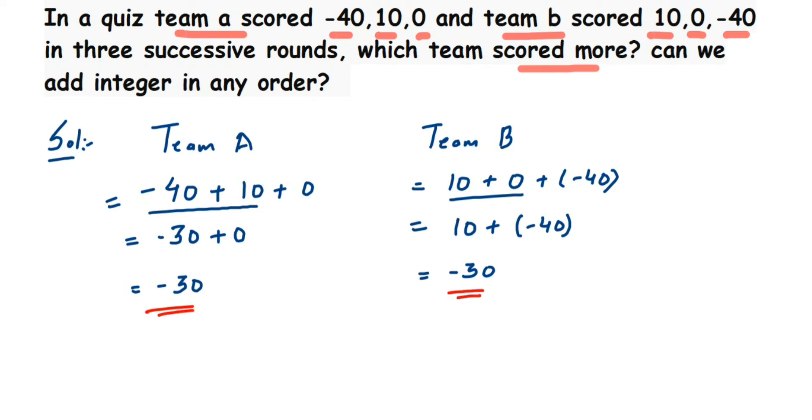What we can conclude from here is if you add integers in any order, the result will always be the same. You can replace the numbers, rearrange them, and you'll get the same answer. But when you subtract integers, the answer will not be the same. That's why we say the commutative property holds in case of adding integers, whereas in subtraction it does not hold.